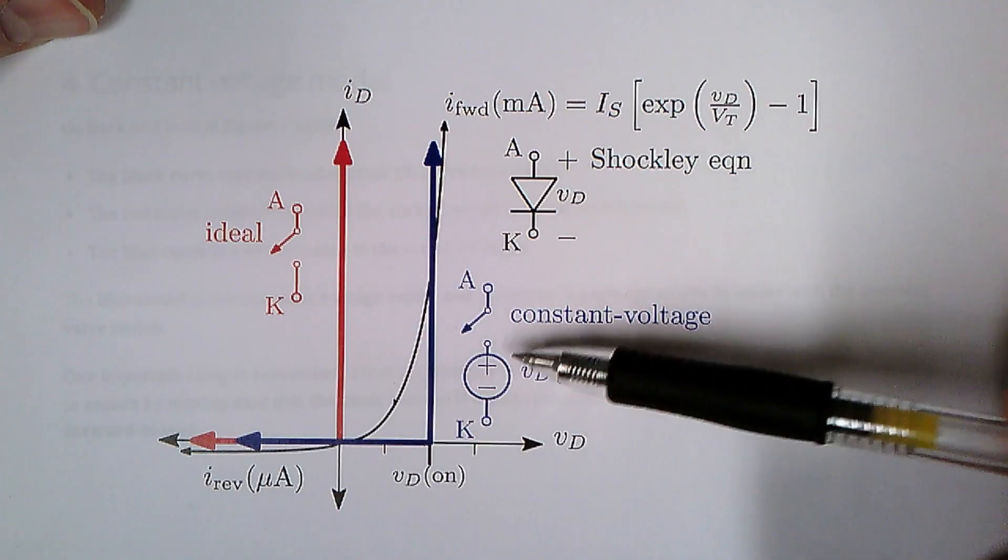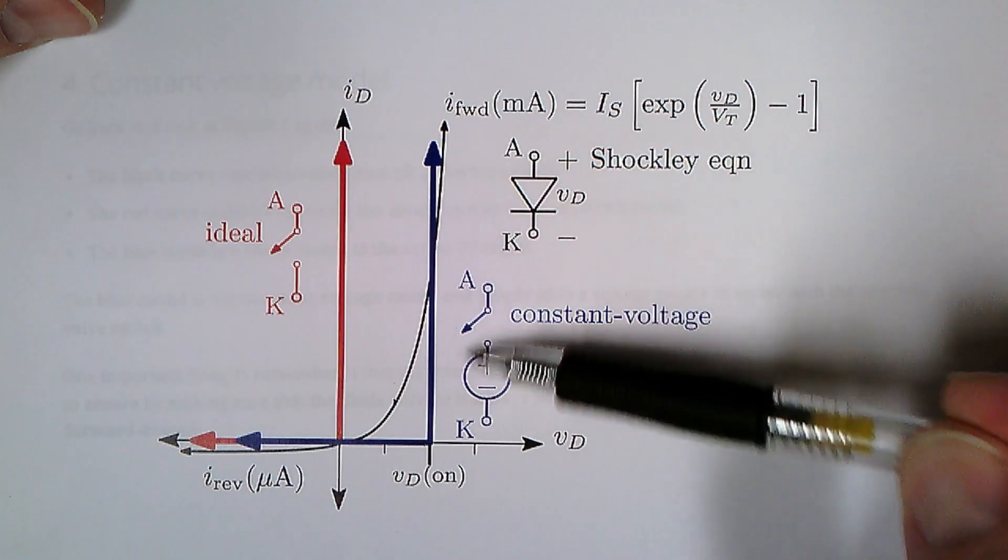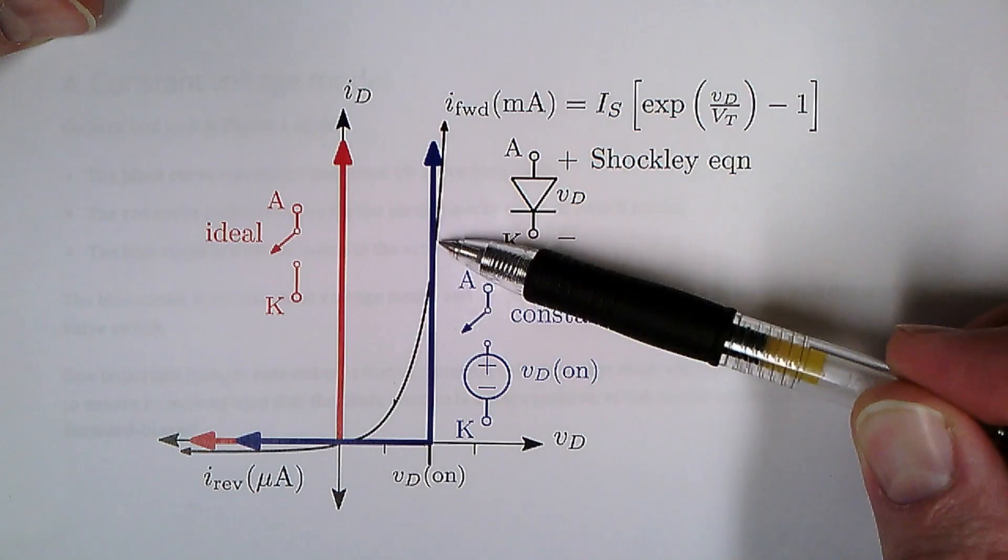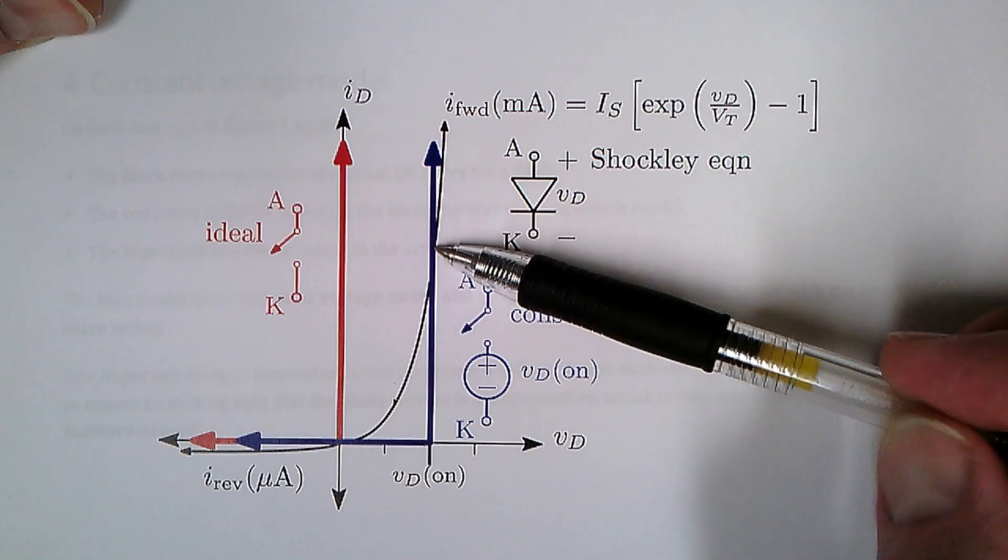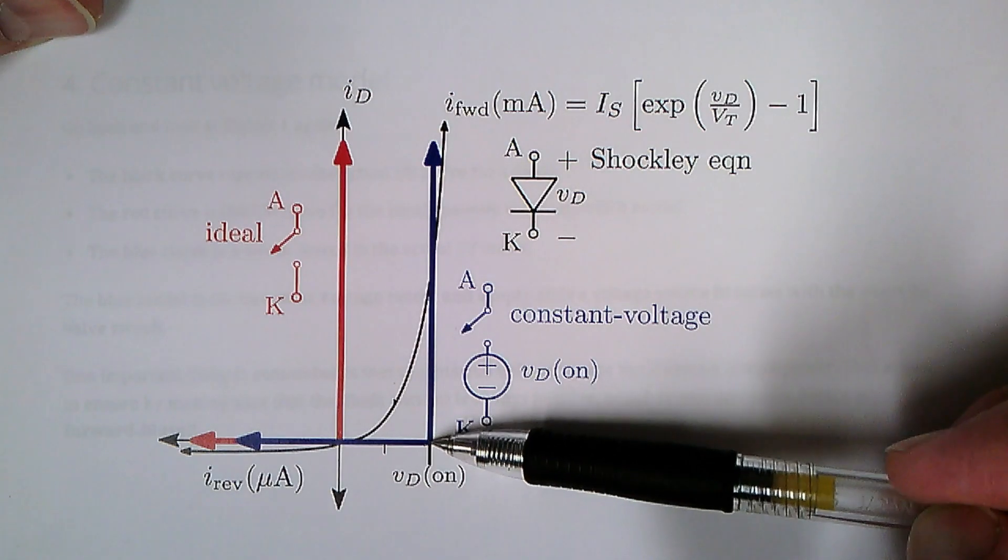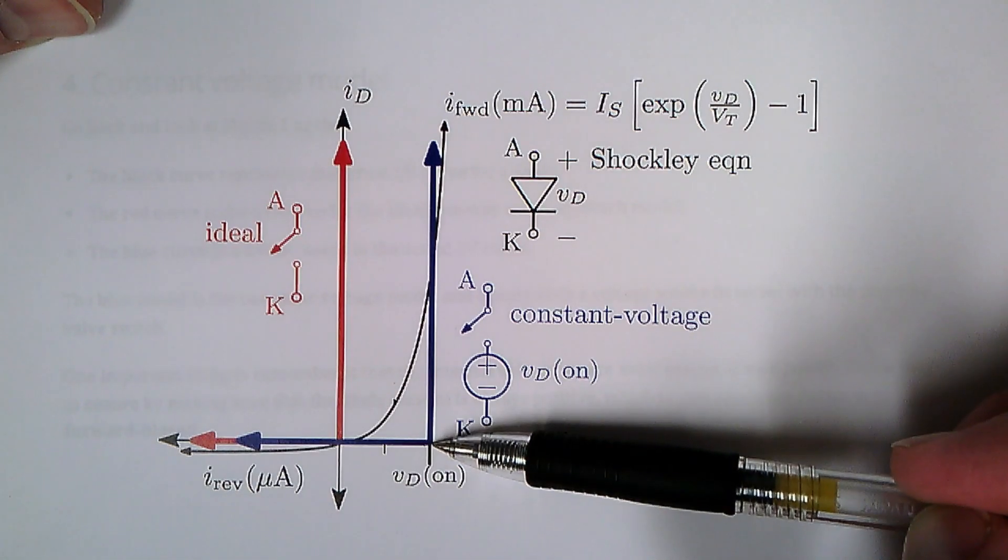The constant voltage model just shifts this plot over. We still use the easy switch, but then shift this over by amount VD on, so now we intersect here. And when our diode is on, we expect to have a voltage across the diode that's around 0.6 volts for a silicon diode, 0.7, 0.65, something like that.